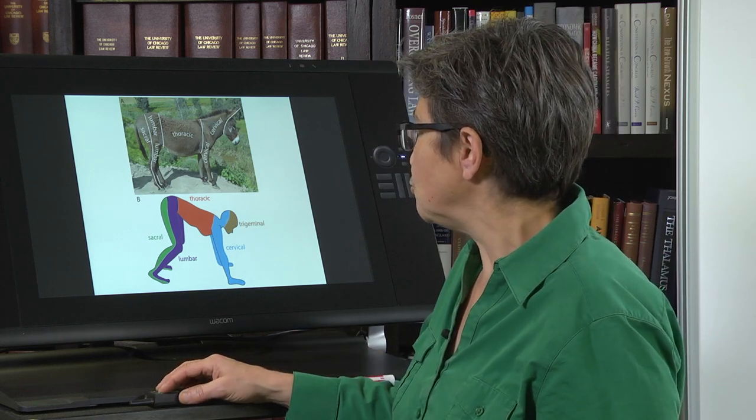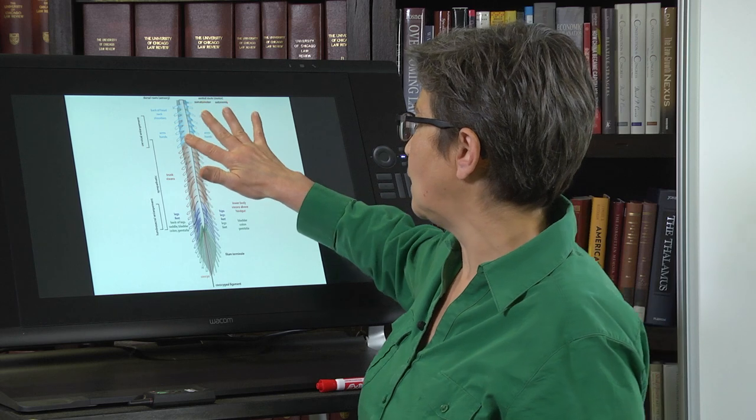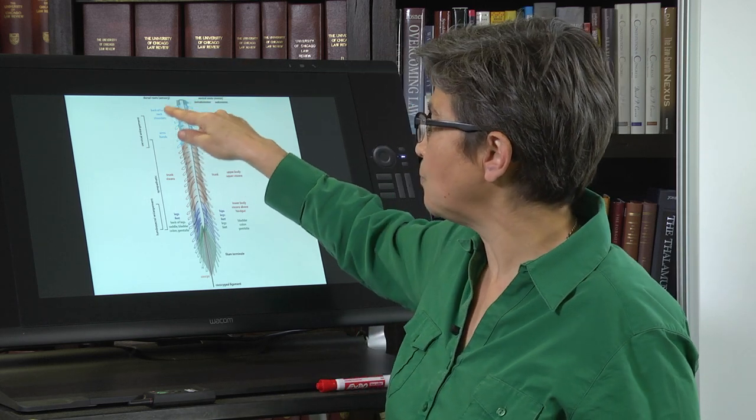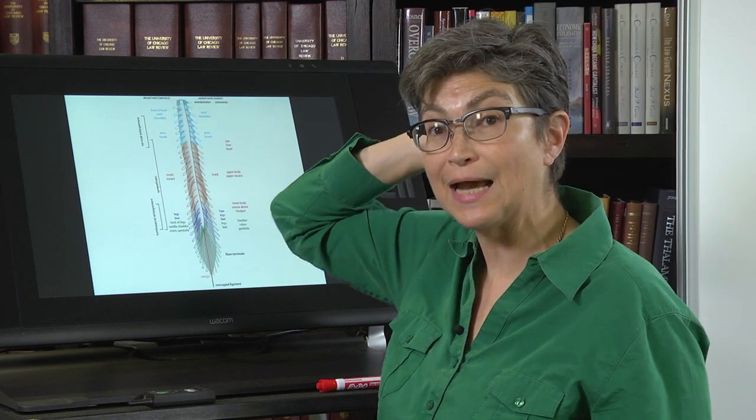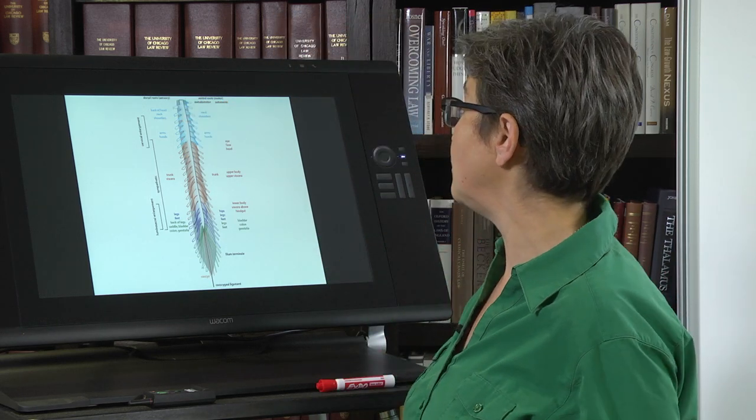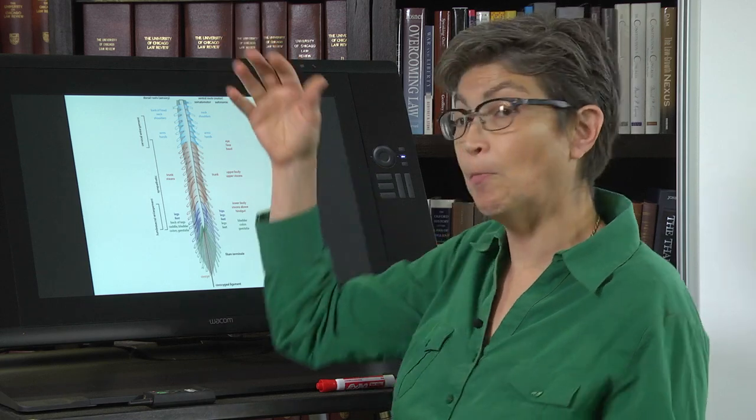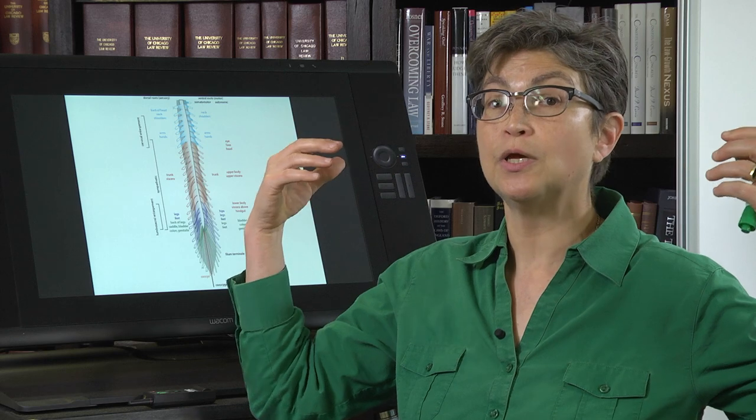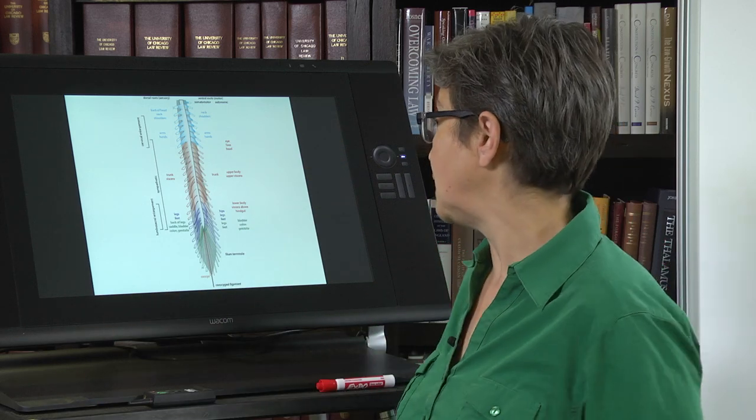So what do the cervical spinal cord, from a sensory point of view, it's the back of the head, the neck, the shoulders, and the arms and the hands. From a motor point of view, it's most of the neck, shoulders, and arms and hands.